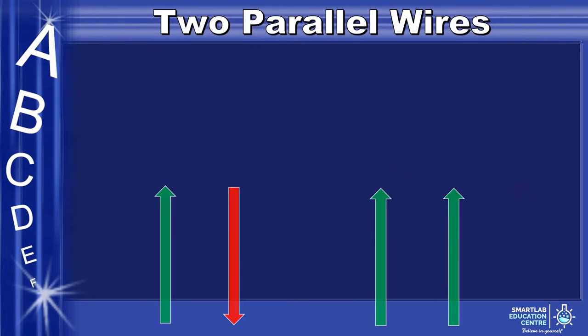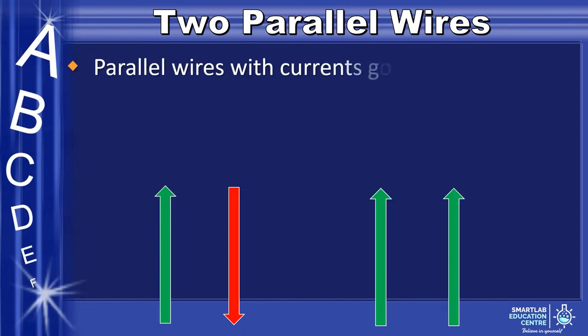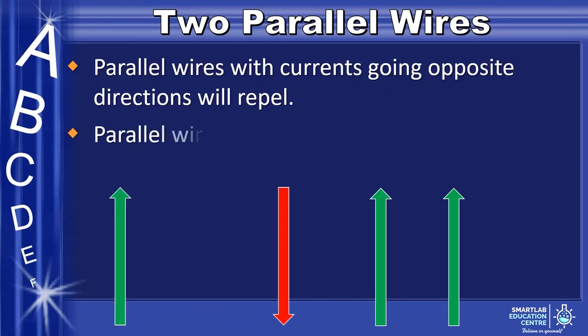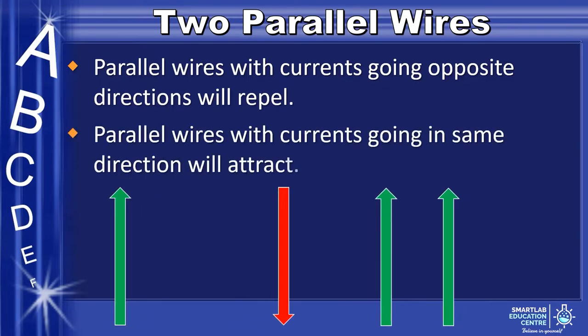Here we have two scenarios with the wires. One pair where the currents are going in opposite directions, and one pair where the currents are going in the same direction. Parallel wires with currents going in opposite directions will repel. However, parallel wires with currents going in the same direction will attract.